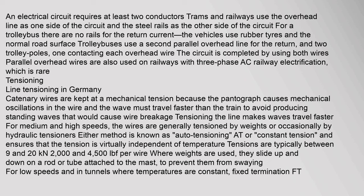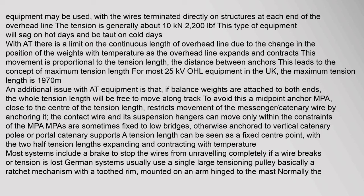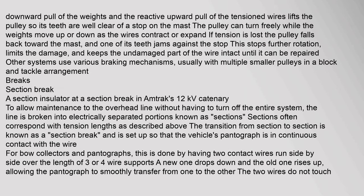Catenary wires are kept at a mechanical tension because the pantograph causes mechanical oscillations in the wire, and the wave must travel faster than the train to avoid producing standing waves that would cause wire breakage. Tensioning the line makes waves travel faster for medium and high speeds. The wires are generally tensioned by weights or occasionally by hydraulic tensioners — either method is known as auto-tensioning or constant tension — and ensures that the tension is virtually independent of temperature.